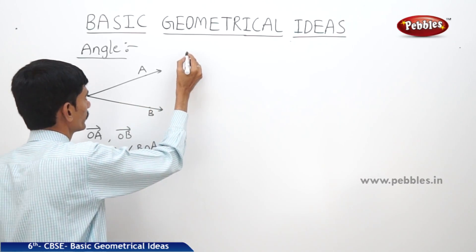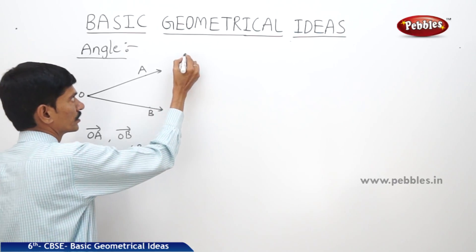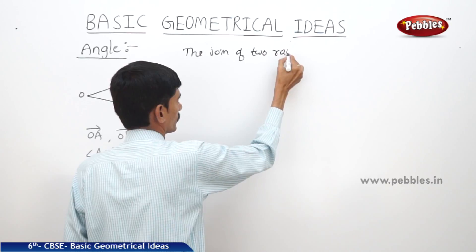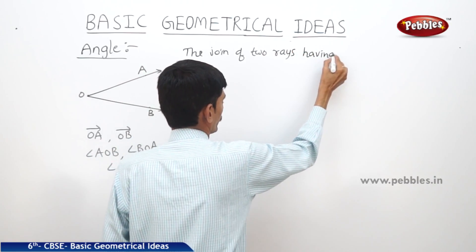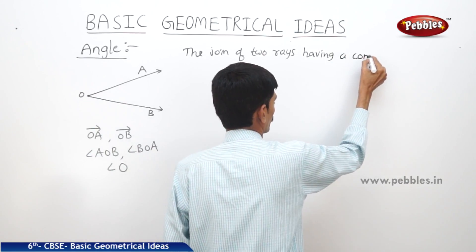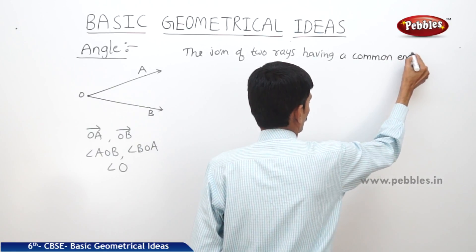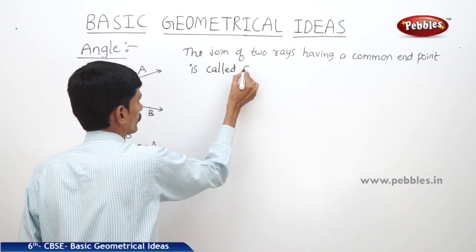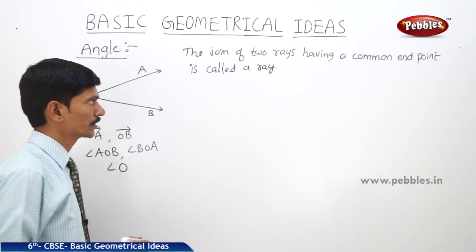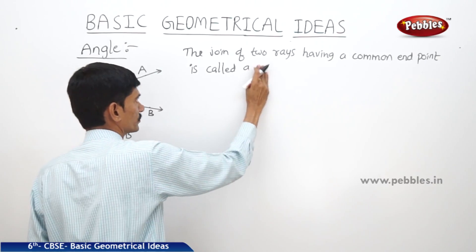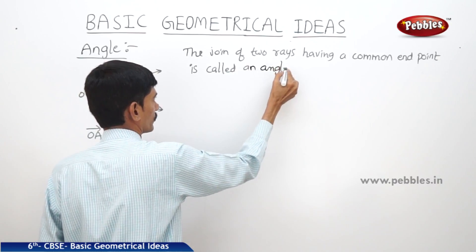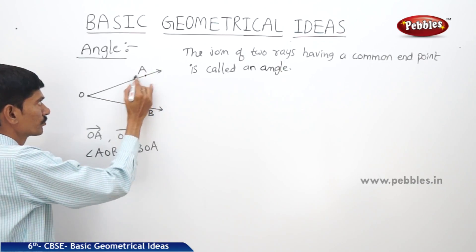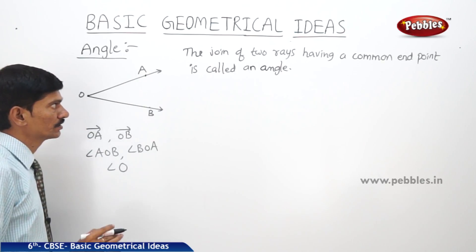The definition of an angle: the join of two rays having a common endpoint is called an angle. The angle AOB is formed by the two rays OA and OB. These two rays are called the sides or arms of the angle.